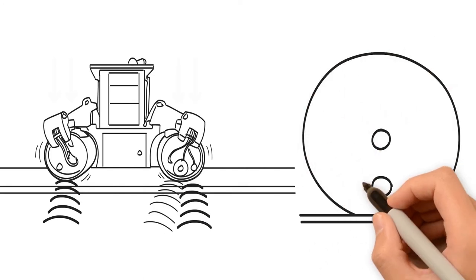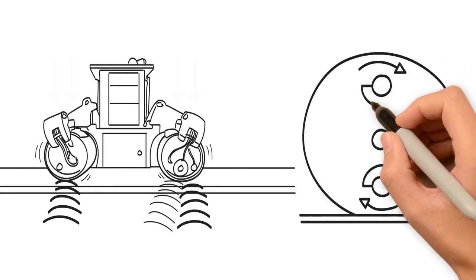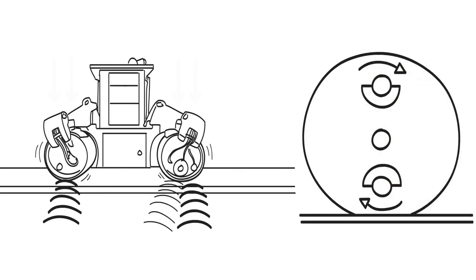On a vibratory compactor, the drum moves up and down rapidly to create the force of vibration. The up and down movement is caused by a rotating eccentric weight that is inside the drum.